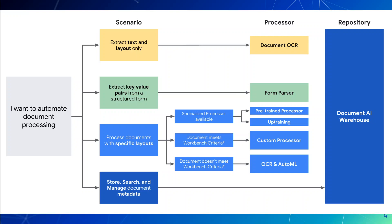A quick overview of these parsers: the OCR processor allows you to identify and extract text, including handwritten text, from documents in over 200 languages. The processor also uses machine learning to perform a quality assessment based on the readability of its content. The form parser applies advanced machine learning technologies to extract key-value pairs, checkboxes, and tables from documents in 200-plus languages, and just like OCR, it also leverages deep learning models.